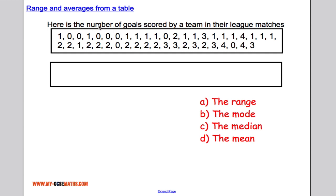So suppose we have a data set here, and it's the number of goals scored by a football team in their league matches, and I'm asked to work out the range, mode, median, and mean.